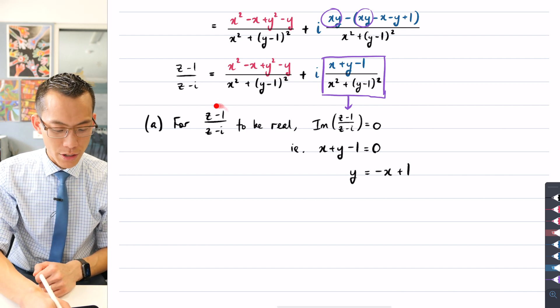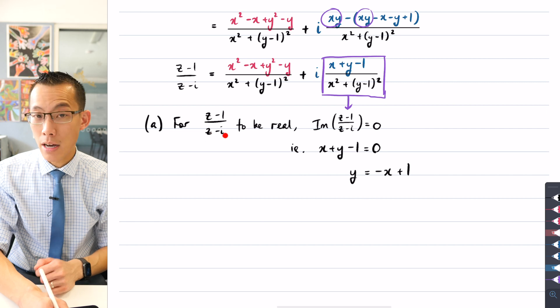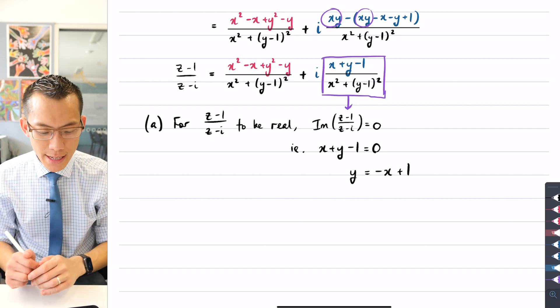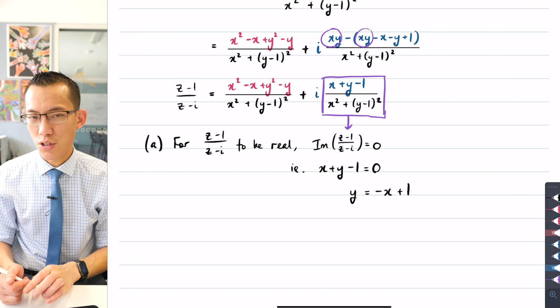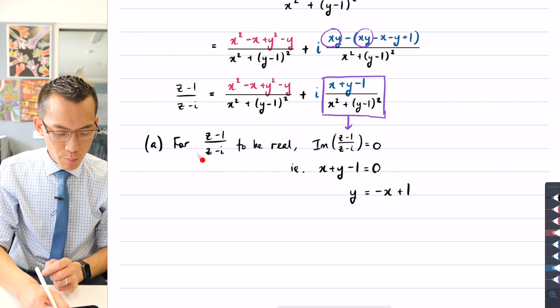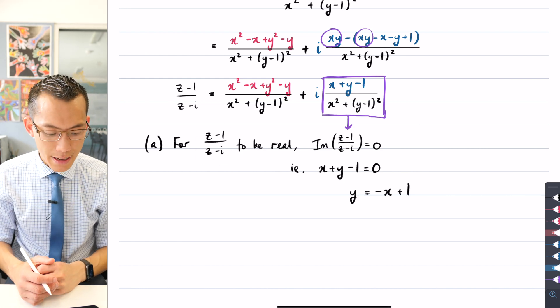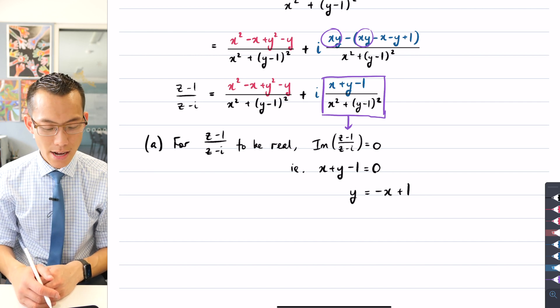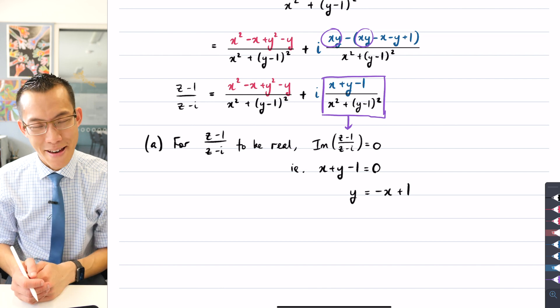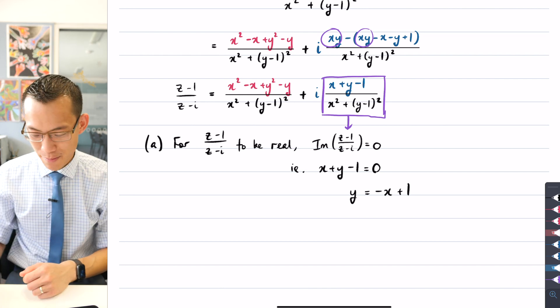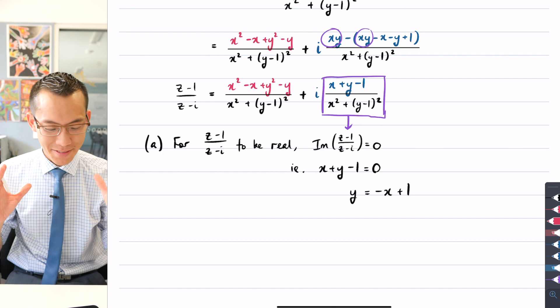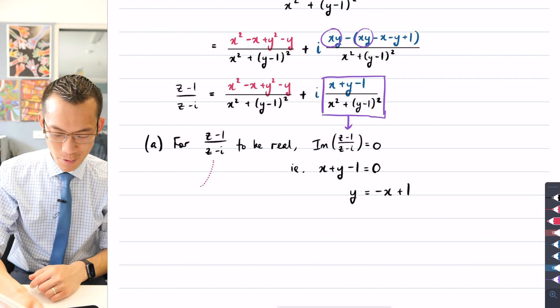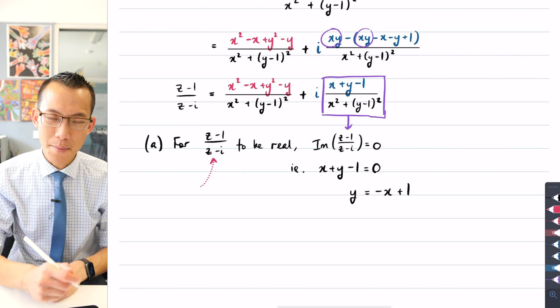If you have a look at this original question, we want z minus 1 over z minus i to be real, and it's a bit sneaky here because this expression has a discontinuity built into it. There is a value that z is not allowed to take, otherwise the universe of mathematics explodes. This denominator here, z minus i.